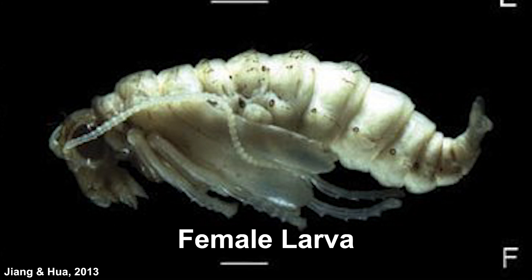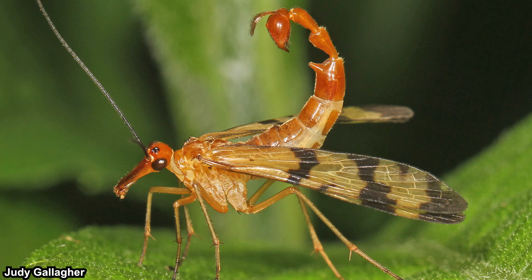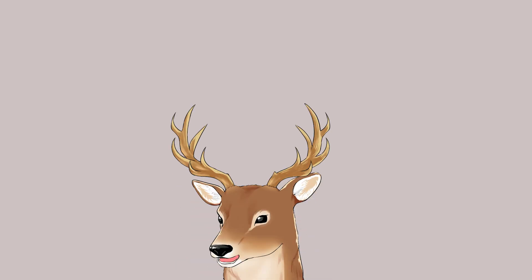Pupation occurs in the soil underground. While they are exarate and can technically move their mouth and appendages, they are mostly non-motile. They stay for around one to two weeks before finally reaching the imago stage — the adult scorpion fly.